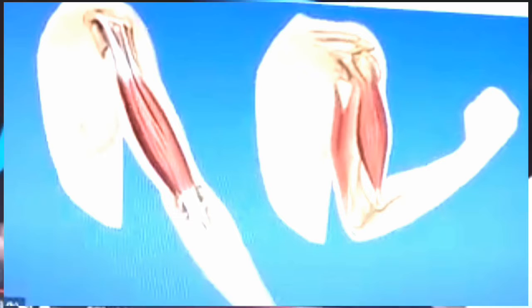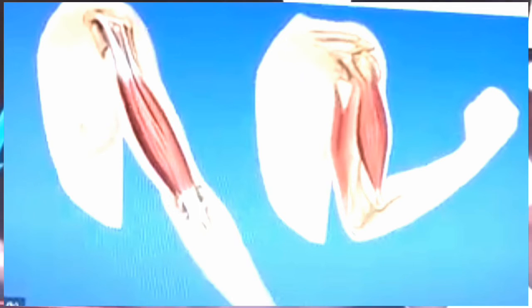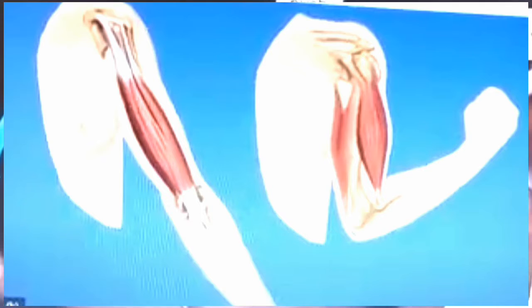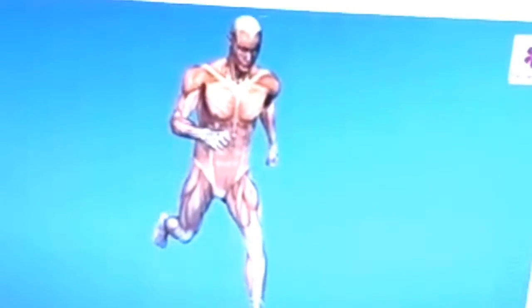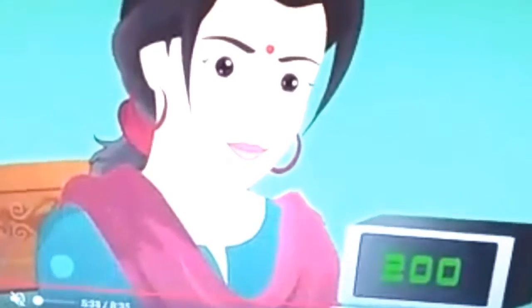Muscles provide push and pull which the bones need to bring about movement. There are more than six hundred different muscles in our body. The only muscle that is exposed on the outside is our tongue. If we blink our eyes, we move 200 muscles at one time. The smallest muscle is inside our ear.